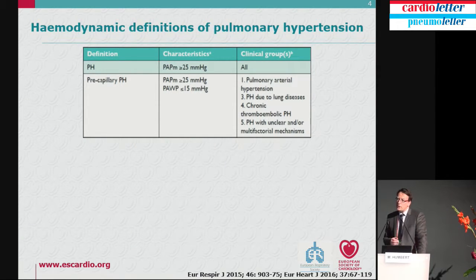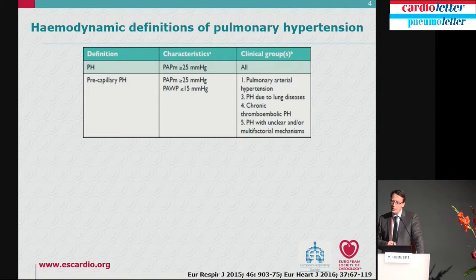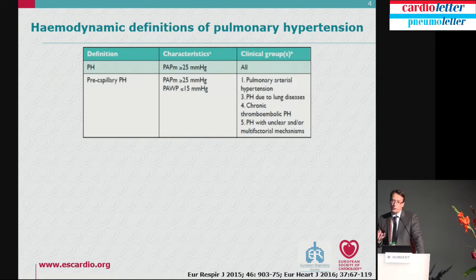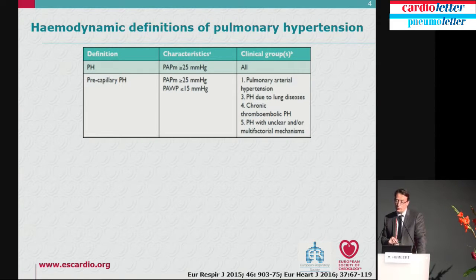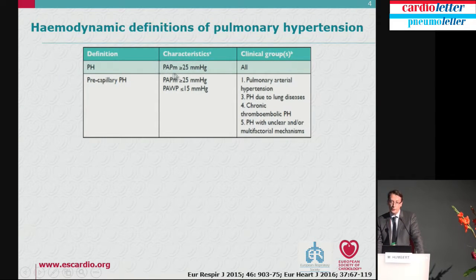To start with a condition like pulmonary hypertension, we have to start with definitions. The definition has not changed, but should be very well emphasized. Pulmonary hypertension is defined by invasive measures of mean pulmonary artery pressure above or equal to 25 mmHg. This is a definition. You have non-invasive assessments, but for a robust definition, 25 is the number, and it's mean, not systolic.